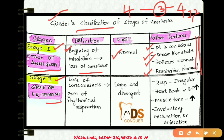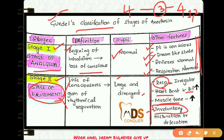Stage two is called the stage of excitement. It starts from the loss of consciousness to the onset of rhythmical respiration. The pupil in this stage is large and divergent. Heart rate, blood pressure, and muscle tone are increased, whereas respiration is irregular. Involuntary movements such as micturition and defecation can occur in stage two.